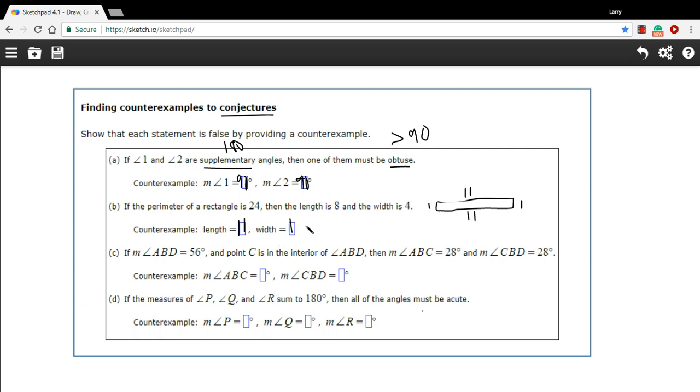All right, C says if angle ABD equals 56 degrees, let's go ahead and draw a picture for this one. So ABD—let's see, B is the vertex because it comes in the middle, and then we've got a point out here called A and a point out here called D. All right, and point C is in the interior of ABD.